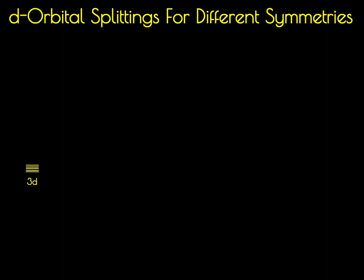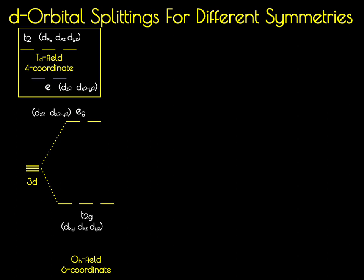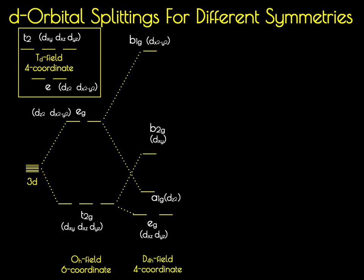The process of using the point group to determine orbital degeneracies, combined with the directionality of the orbitals relative to the surrounding negative point charges, can be applied to molecules in any coordination environment. We've already done this for Oh (6-coordinate) and Td (4-coordinate) symmetries, as well as square planar D4h (4-coordinate). We're now going to look at two different 5-coordinate scenarios: a square pyramidal structure in a C4v field, and a trigonal bipyramidal structure in a D3h field.